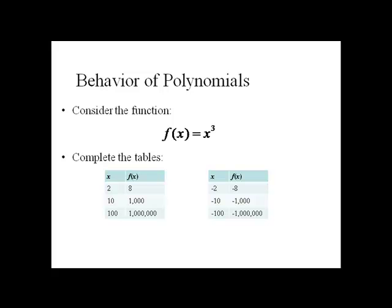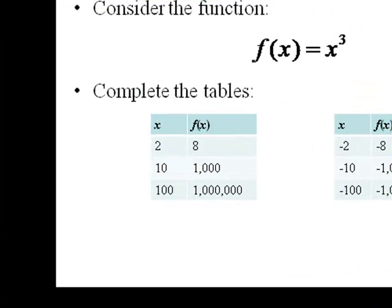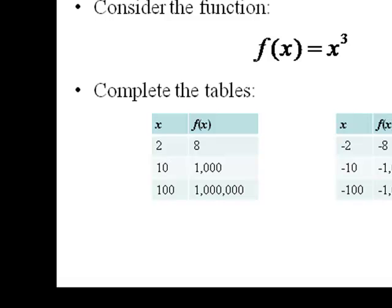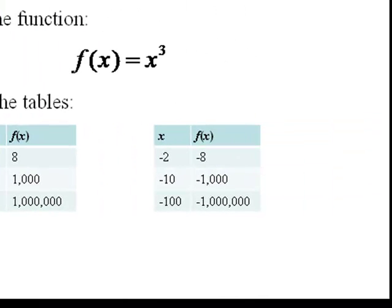If we complete the two tables, what we see is that as x gets bigger, f of x also gets bigger. In fact, it gets much bigger. As x goes to larger negative values, f of x goes to larger negative values.